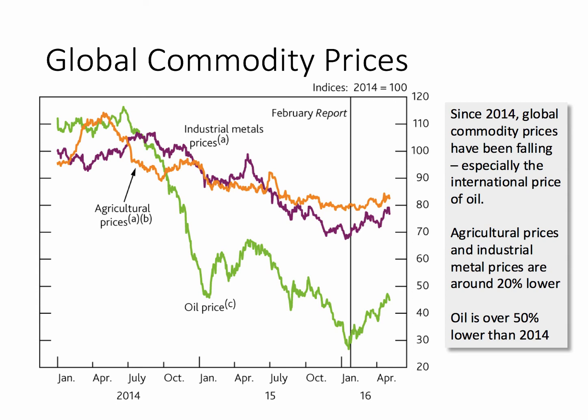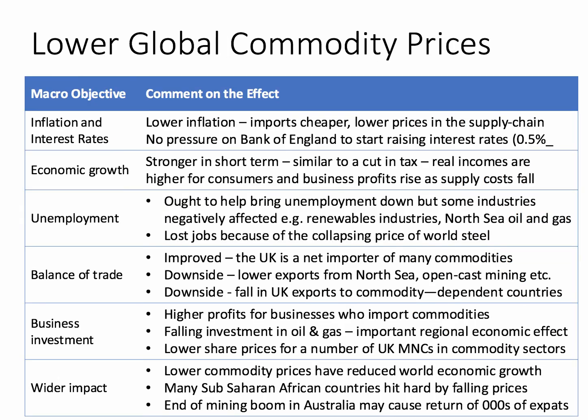Global commodity prices are a key external factor affecting the UK. Since 2014, global commodity prices have been falling quite sharply — oil is down by more than 50% and metal prices are down by 20%. In theory, falling global commodity prices should help keep inflation down in the UK, with cheaper costs for businesses and no pressure on the Bank to raise interest rates. It should be good for growth, and if the price of oil goes down it's like a consumer tax cut. It should help bring unemployment down. But some industries are negatively affected — oil and gas in the North Sea badly, and the steel industry badly affected by the collapsing price of steel.